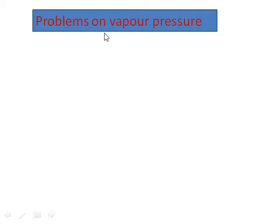The four colligative properties are: lowering of vapor pressure, elevation in boiling point, depression in freezing point, and finally osmotic pressure. Now we will discuss vapor pressure.